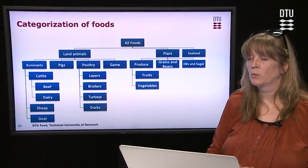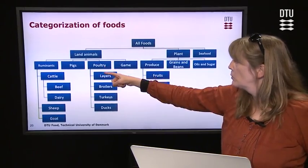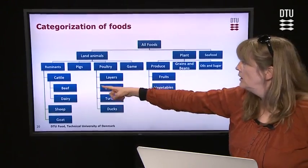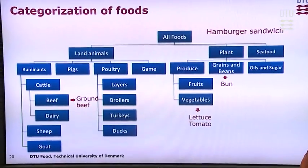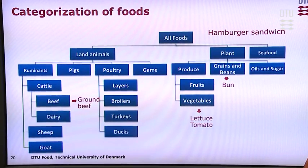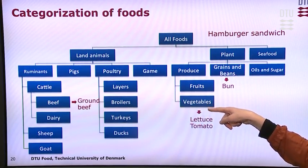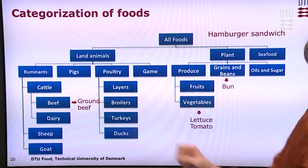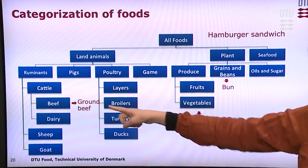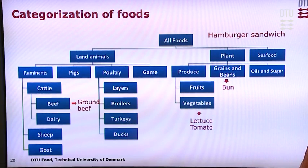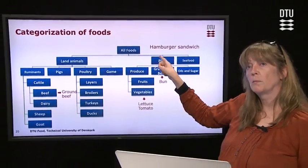Here is a categorization scheme of foods that tries to encompass all foods in major categories reflecting more or less the reservoir. For poultry we have laying hens, broilers, turkey, and ducks; for ruminants a similar range; and for produce we have fruits and vegetables. Taking the hamburger example: the bun goes into grains and beans, the lettuce and tomato into vegetables, and the ground beef into beef. Then we look at how many outbreaks reported in a certain time period were caused by beef, how many by vegetables, how many by grains and beans, and distribute relatively. So if 40% of outbreaks are caused by ground beef, there is a 40% chance the hamburger outbreak was caused by beef.